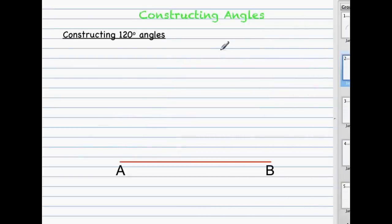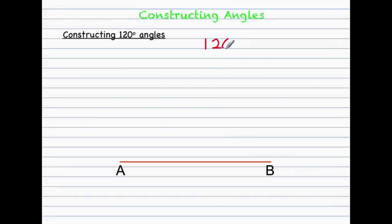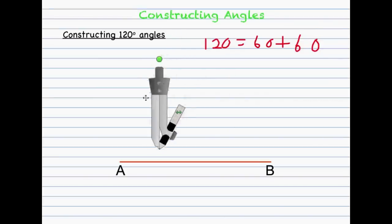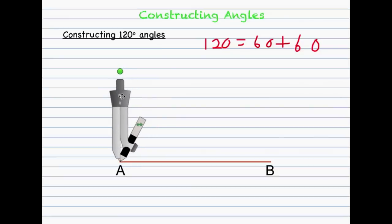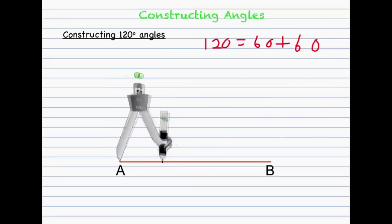Let me move on now to the construction of a 120 degree angle. I'm thinking about 120 degrees as 60 degrees plus 60 degrees. So if I first draw a 60 degree angle and then draw another 60 degree angle on top of that one, I would have created 120 degrees. So the first thing we need to do is construct the first 60 degree angle — take the tip of the compass to point A, open it about a third of the distance between A and B, and create a semicircle backwards.